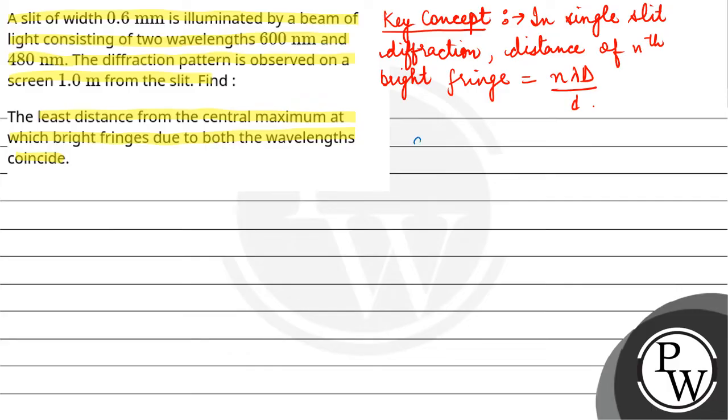So here we have the width of the slit given as 0.6 mm, which is 0.6 into 10 raised to the power minus 3 meter, and capital D is 1 meter.